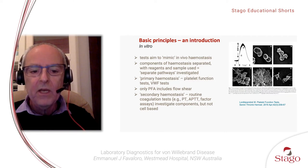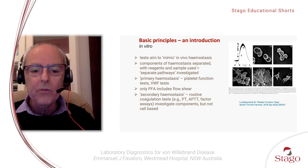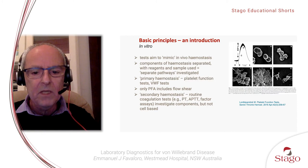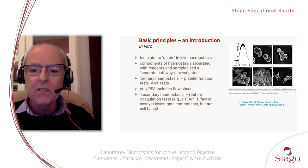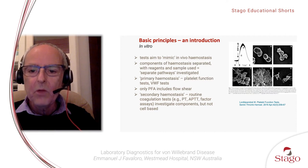We also have tests for secondary haemostasis. Here, we talk primarily around the routine coagulation tests, such as the prothrombin time, the APTT, and factor assays. These investigate components of haemostasis, but these assays are not cell-based. In this figure, I show a picture which shows an example of what we see in vitro using a platelet function test, where we have platelet aggregation in response to an agonist, at various stages of a primary wave of platelet aggregation.